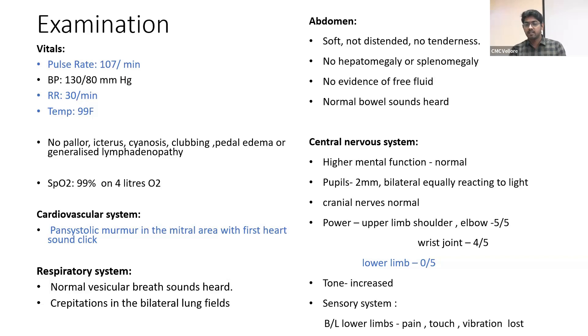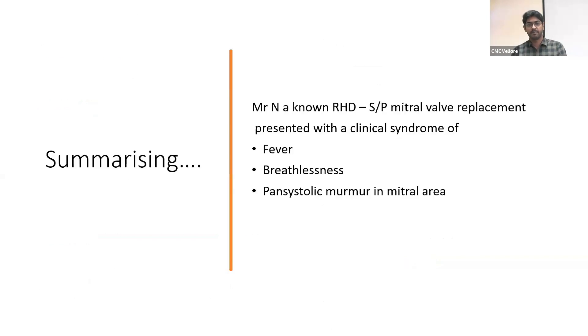CNS examination showed power in the upper limbs — shoulder and elbows 5/5, wrist joint 4/5 — and power in the lower limbs 0/5. Tone was increased. Sensory system: bilateral lower limbs pain, touch, and vibrations were lost.